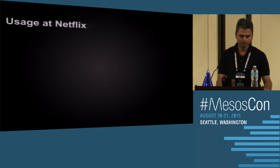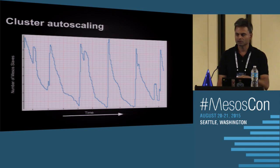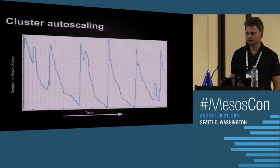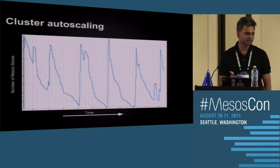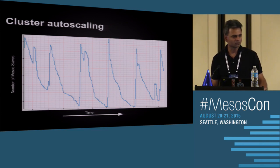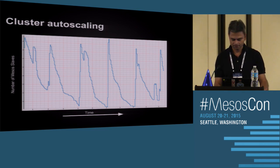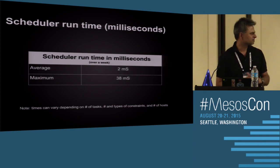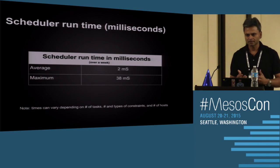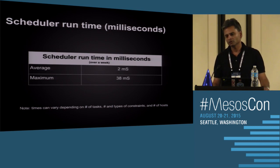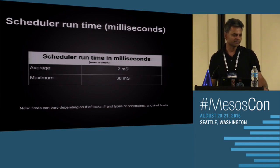At Netflix, for auto-scaling we observed about a 3x difference between peak and trough across approximately five to six days, scaling the cluster up and down based on actual demand — sometimes driven by time of day, sometimes by service activity. For scheduling speed, it's just a few milliseconds to figure out an assignment using bin packing with a couple of criteria and constraints. Scheduling time depends on the number of tasks, number of hosts, and constraint types, but generally it is fast.